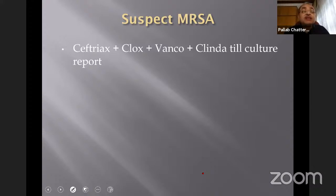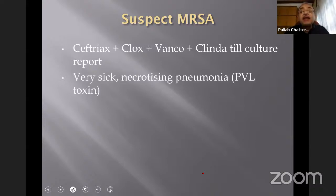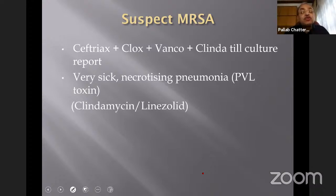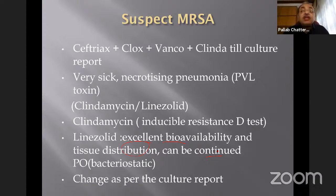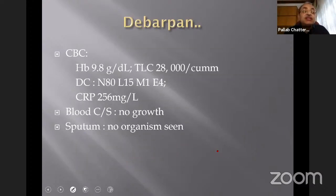When suspecting MRSA, start with ceftriaxone plus flucloxacillin plus vancomycin and clindamycin until culture results return, then de-escalate. For very sick children when thinking of Panton-Valentine Leukocidin toxin, clindamycin and linezolid are good choices. Remember that linezolid has excellent bioavailability and tissue distribution in the lungs, and can be continued per orally despite being a bacteriostatic drug. For MRSA pneumonia, linezolid is a good choice; clindamycin is also excellent.